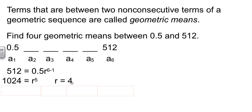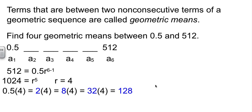Now that I have r, all I have to do is start here and multiply by r to go across. So 0.5 times 4 is 2, times 4 is 8, times 4 is 32, times 4 is 128. So the blue values here are the four numbers that fit in the blanks.